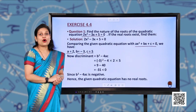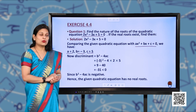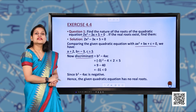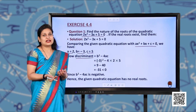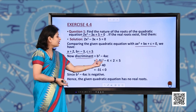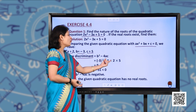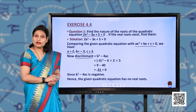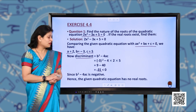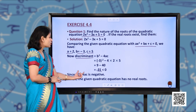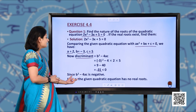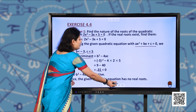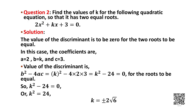Now find the value of D. D equals B² minus 4AC. Substituting the values: minus 3 whole square minus 4 into 2 into 5. After solving, you get minus 31, which is again negative. So B² minus 4AC is negative. Hence the given quadratic equation has no real roots.